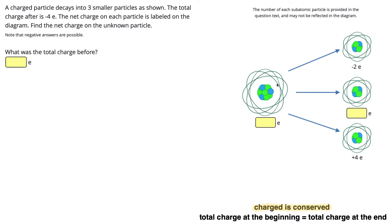In this situation, we have a charged particle shown here, which decays into three smaller particles. So all that means is our charged particle splits up into three other smaller particles. The question also tells us the total charge after is negative 4e.